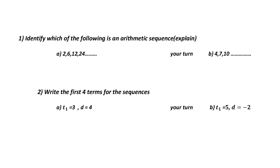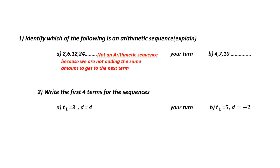Identify which of the following is an arithmetic sequence and explain. How do we know if something's an arithmetic sequence? We would be adding the same amount each time. To go from 2 to 6, I would add 4. To go from 6 to 12, I would add 6. So I'm not adding the same amount each time. Therefore, this is not an arithmetic sequence.